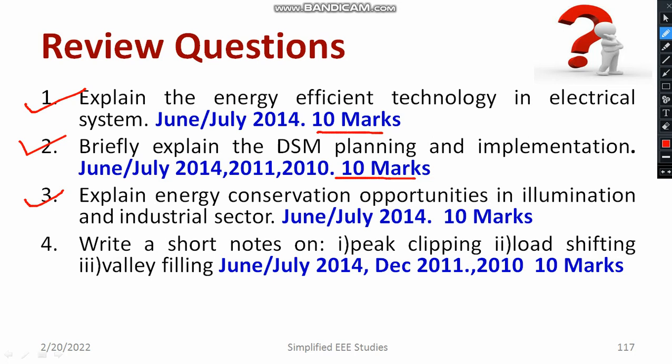Explain energy conservation opportunities in the illumination and industrial sector. For illumination, talk about 3 to 4 points — especially you can mention using LED instead of incandescent lamp bulbs. For the industrial sector, talk about energy efficient models. The weightage is 5 plus 5: 5 marks for illumination and 5 marks for the industrial sector. Try to write point by point, and underline important technical terms to attract the examiner's attention.